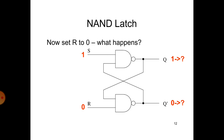In the second NAND gate, one input is R, which will be 0. The second input of the second NAND gate is Q, and here Q will be 1. So the inputs to the second NAND gate are 1 and 0, which means the output will be 1 according to the NAND gate truth table.